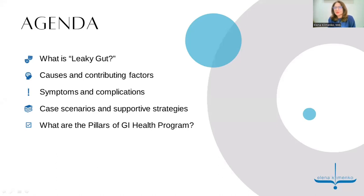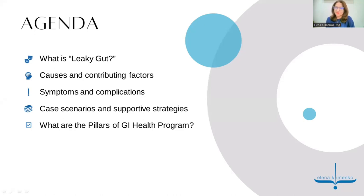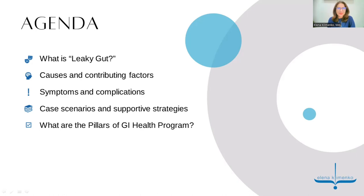In today's agenda, we'll be discussing what leaky gut is — this phenomenon that's getting so much attention in the medical literature lately — where it's coming from, how it happens, what are the causes or contributing factors. We'll also talk about symptoms and complications of leaky gut that are sometimes beyond the gut level, appearing in other tissues like joints and the brain. We'll discuss the typical case scenario and how functional medicine therapies differ from conventional medicine.